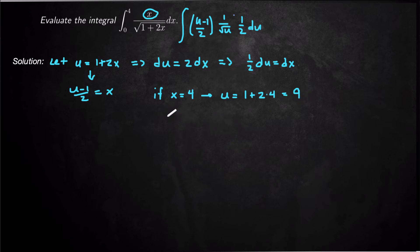And if x equals my lower bound of 0, then u is equal to 1 plus 0, which is 1.